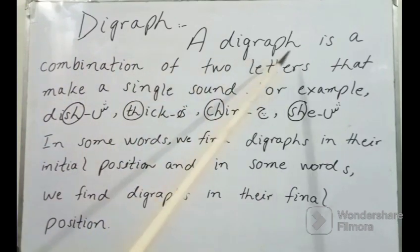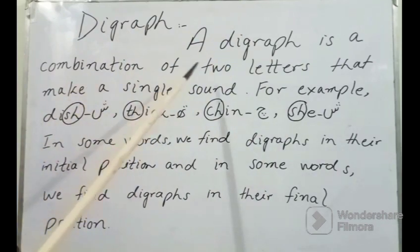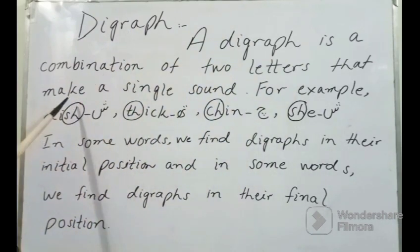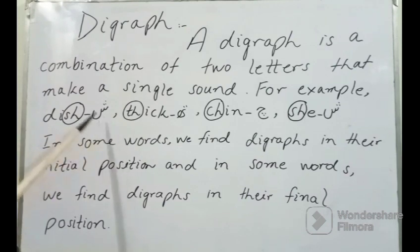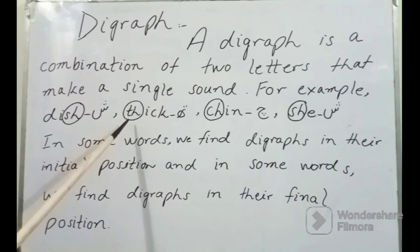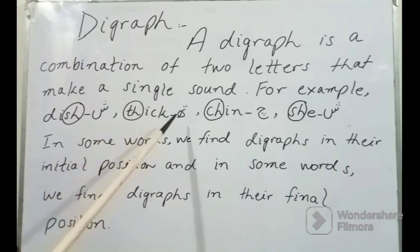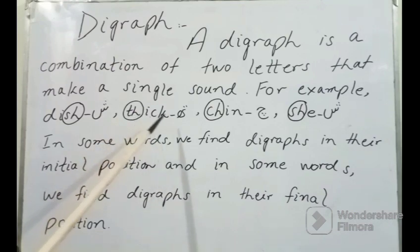A digraph is a combination of two letters that make a single sound. For example we have different examples like dish, thick, chin, she. Dish میں CH نے ایک آواز کو form کیا اور وہ آواز Urdu میں sheen کی آواز ہے۔ Thick میں TH ہے, TH Urdu میں thay کی sound کو بناتا ہے۔